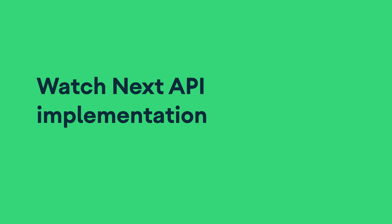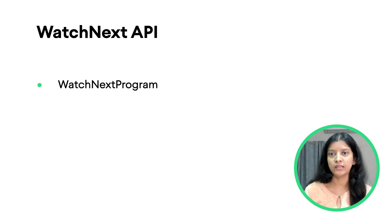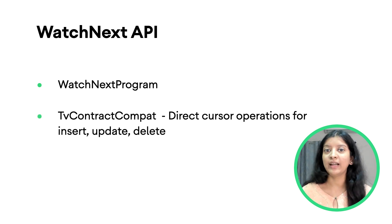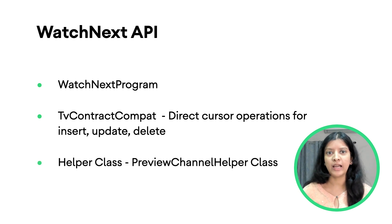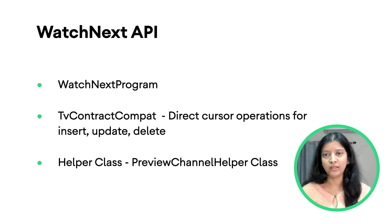We know what the feature is and we know what the user experience is. Now, let's dive deeper into how exactly we achieve this. The Watch Next entries are populated from a system content provider, and the Watch Next program is a convenience class you can use to insert or retrieve program entries. If you're comfortable directly using content providers, we recommend using batch operations over singular operations. To make things simpler and reduce developer effort, we also have a helper class, the preview channel helper, which will manage everything automatically for you.